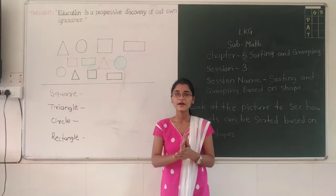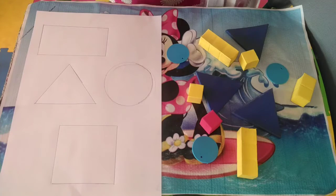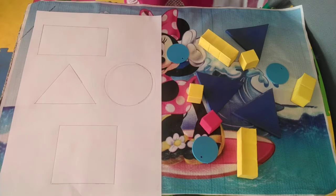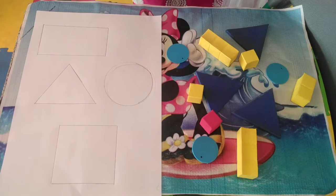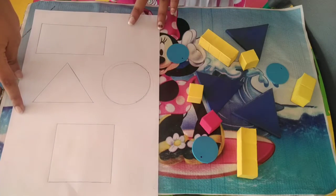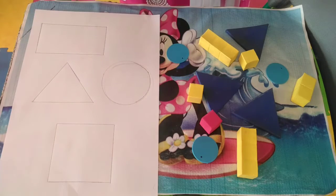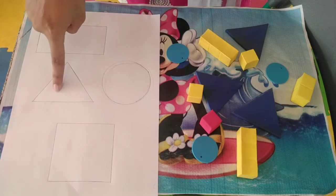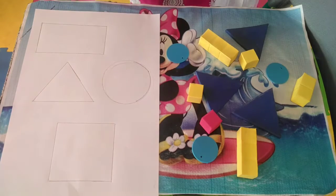Now students, I have some shapes here. Look at here. As you can see, I have kept all mixed shapes here. On the A4 size paper, I have drawn all the shapes — this is rectangle, circle, triangle, and square.